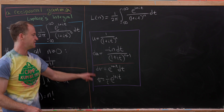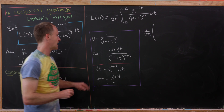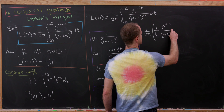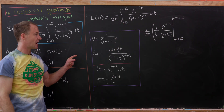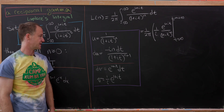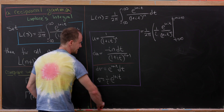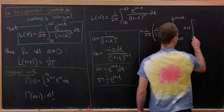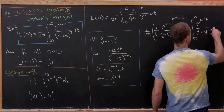Applying integration by parts — u times v minus the integral of v du — we get 1 over 2π times: 1/i times e to the (1+it) over (1+it)^n evaluated from minus infinity to infinity, minus the integral of v du. The i's cancel, the minus signs cancel, and n factors out, leaving plus n times the integral from minus infinity to infinity of e to the (1+it) over (1+it)^(n+1) dt.